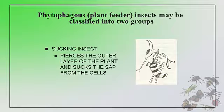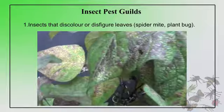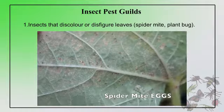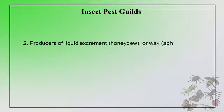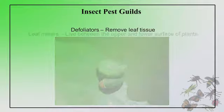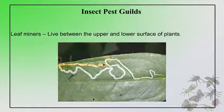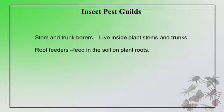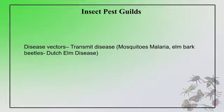You have to know insect pest guilds: insects that discolor and damage leaves, produce liquid excrement, and some are gall-makers that live in specialized habitats produced by plants. Defoliators remove plant tissues, and leaf miners live between the upper and lower surface of plants. Some are stem and trunk borers that live inside plant stems and trunks, some are root feeders, and lastly some insects transmit diseases.